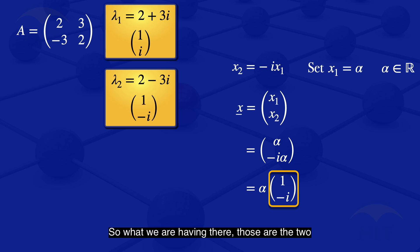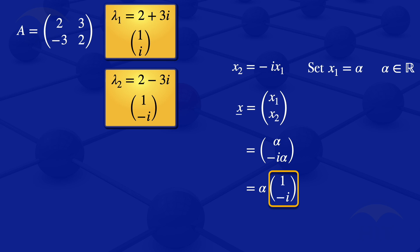So what we have are the two linearly independent eigenvectors for the given 2 by 2 matrix.